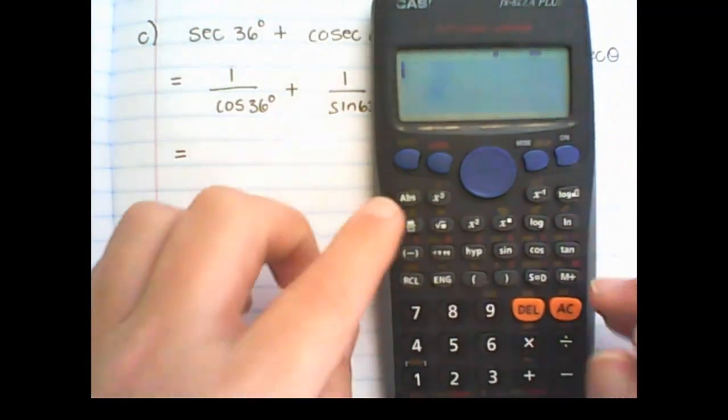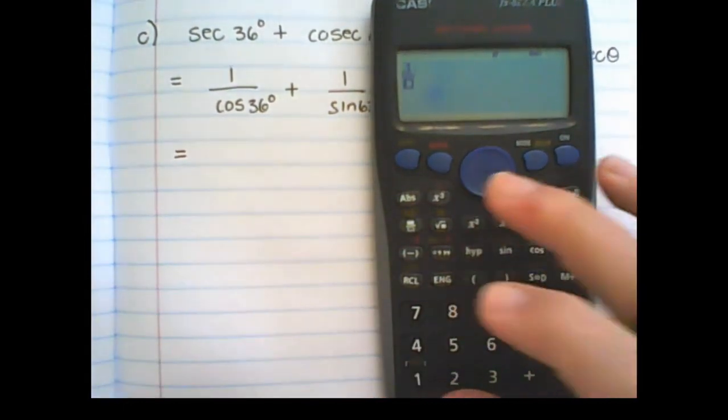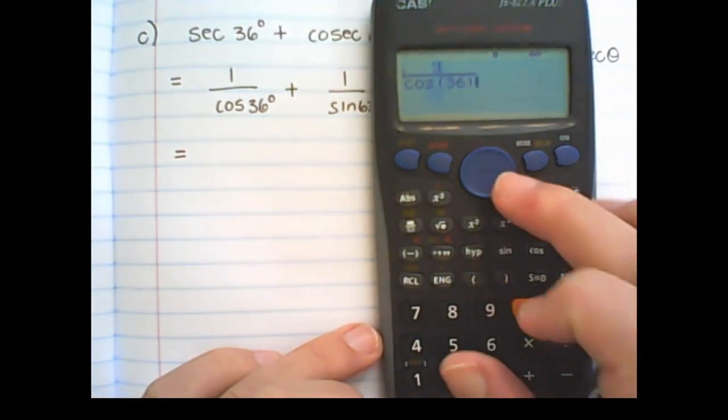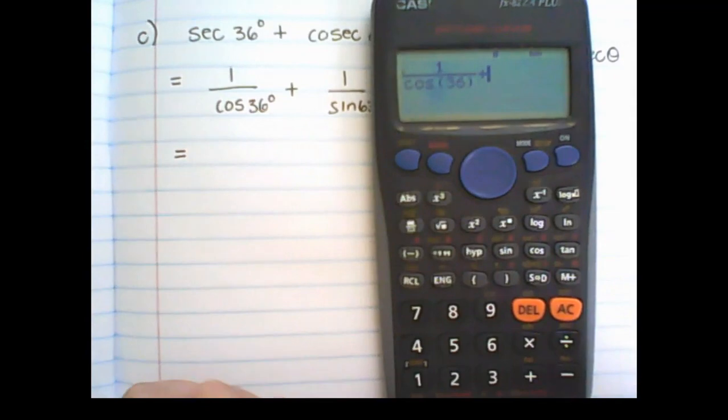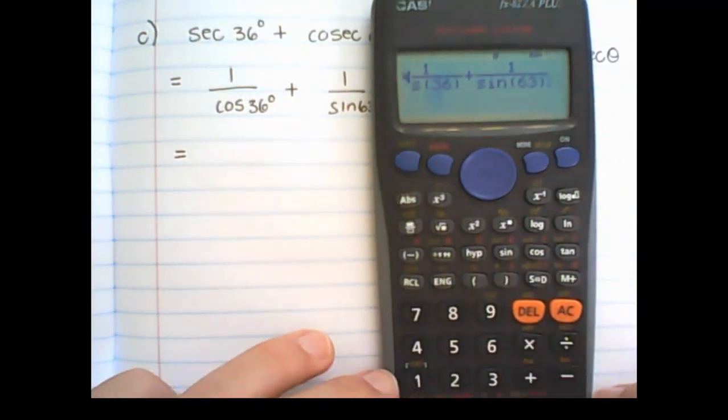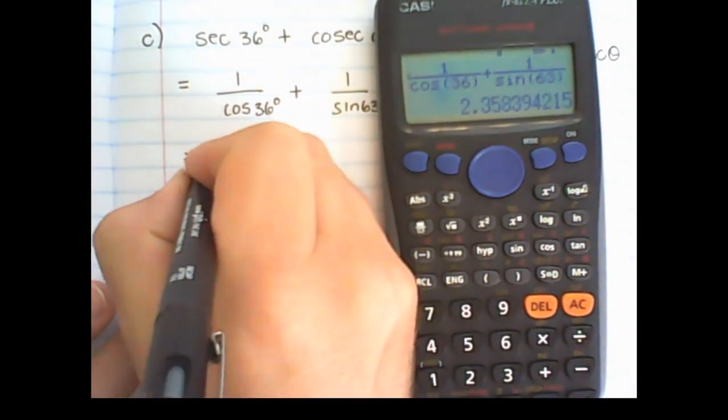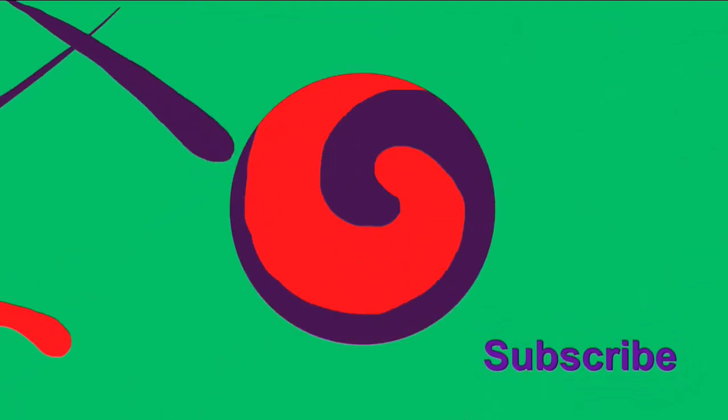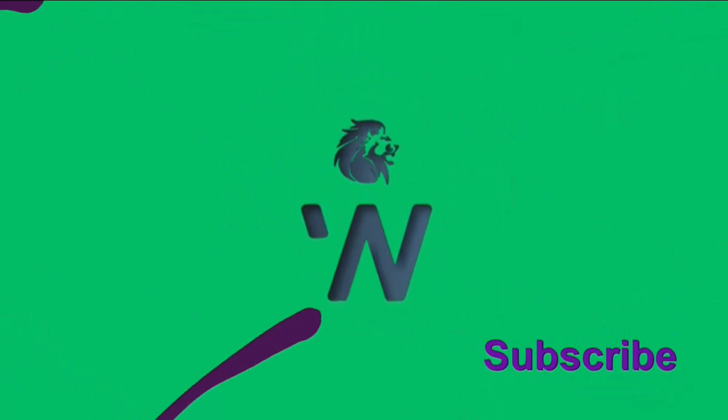Then on my calculator, I would create a fraction and I'll say 1 over cos of 36 degrees plus 1 over sine of 63 degrees. And that is 2.36.